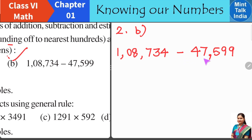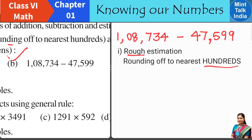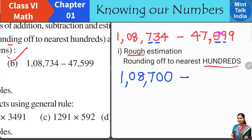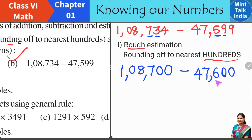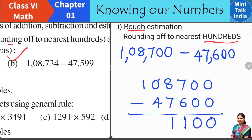Question 2B involves a large subtraction. First, rough estimation by rounding to nearest hundreds: the first number's tens digit is less than 5 so hundreds digit stays as 9; the second number's hundreds digit gets rounded up — it's greater than 5 — giving 47600. Subtracting these large numbers we do it column by column: 0 minus 0, 0 minus 0, 7 minus 1, 8 minus 1, then 10 minus 4 with borrowing, and 1 minus 0. The rough estimated answer is 61100.